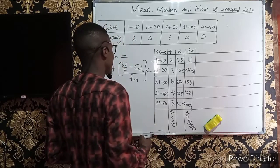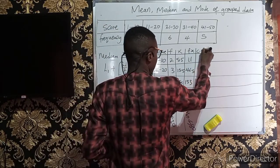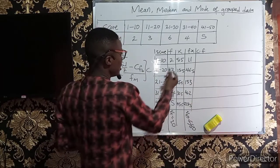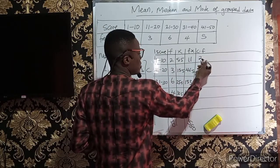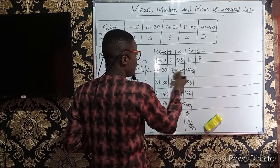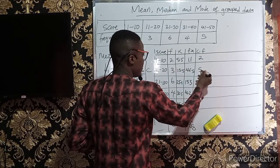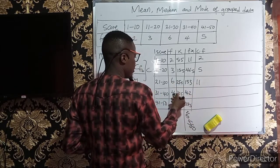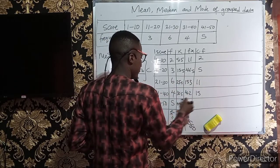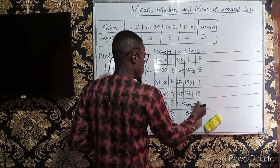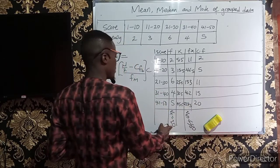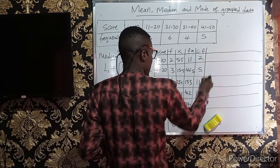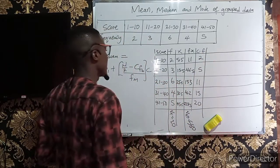To get the cumulative frequency, we sum the frequencies progressively. The first is 2; then 2 plus 3 equals 5; 5 plus 6 equals 11; 11 plus 4 equals 15; and 15 plus 5 equals 20. This final value must correspond to the total sum of frequencies, otherwise a mistake has been made.